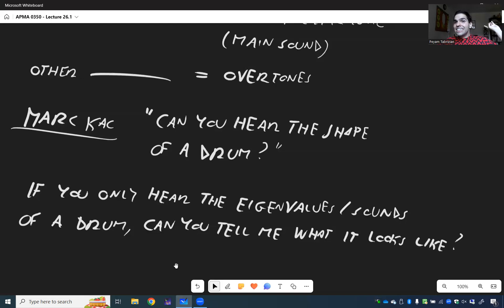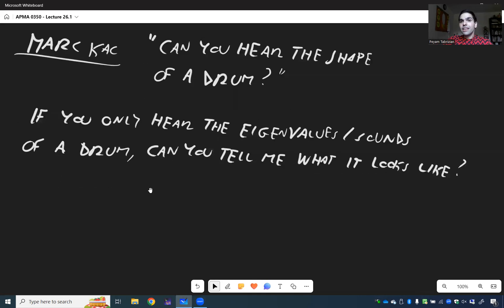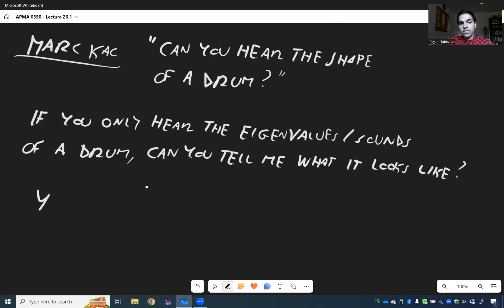The answer is yes. So it turns out in two dimensions, if the instrument has no corners, the answer is yes. In two D, if the instrument has no corners, so it's smooth, and also something called convexity.